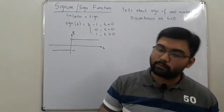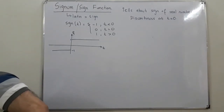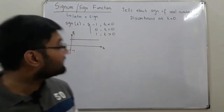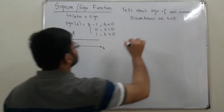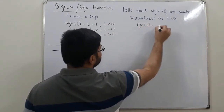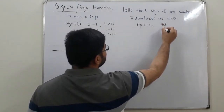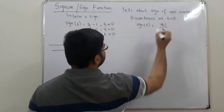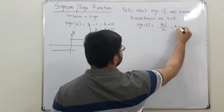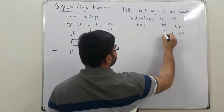Now we have another representation for this function. The signum function equals the absolute value of t divided by t, for t not equal to 0, and when t is equal to 0 the function's value is 0.